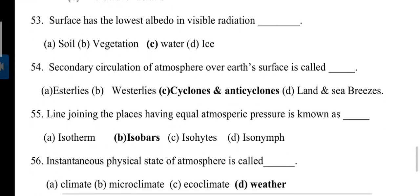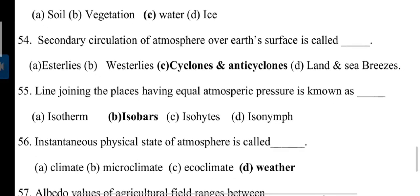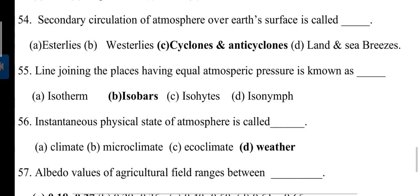Which surface has the lowest albedo in visible radiation? Answer is water. Highest albedo: fresh snow. Next question: Secondary circulation of atmosphere over earth's surface is called cyclones and anticyclones. Cyclone is a roughly circular low pressure area. It has the lowest atmospheric pressure in the center region.